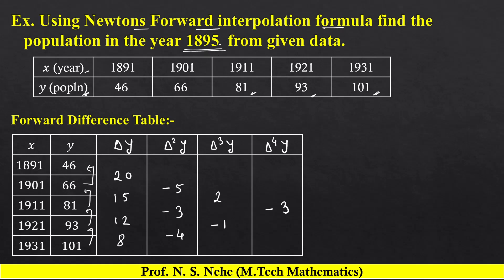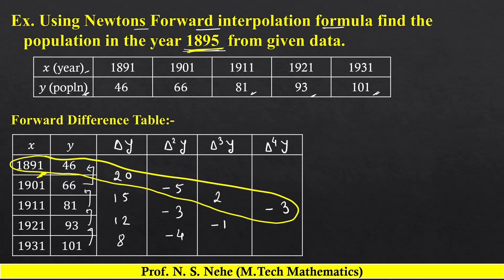अब Newton's forward interpolation formula apply करने के लिए, table में से कुछ values consider करनी हैं। जो value given है 1895, यह 1891 के बाद आती है, means table की starting value है, इसलिए हम यहाँ first row की values consider करेंगे। h find out करने का formula है x1 minus x0: 1901 minus 1891 which is 10, so h = 10.